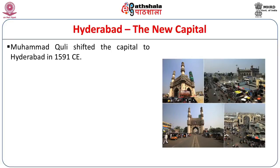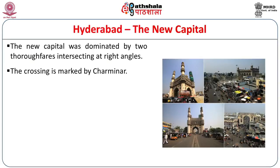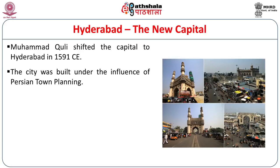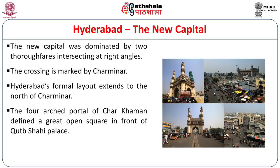Muhammad Kuli shifted the capital to Hyderabad in 1591 CE and the first project was to build the Charminar, located at the crossing of two major thoroughfares. The city was built under the influence of Persian town planning, and this layout extends to the north of Charminar. The four arched portals of Char Kaman defined a great open square in front of the Qutub Shahi Palace.